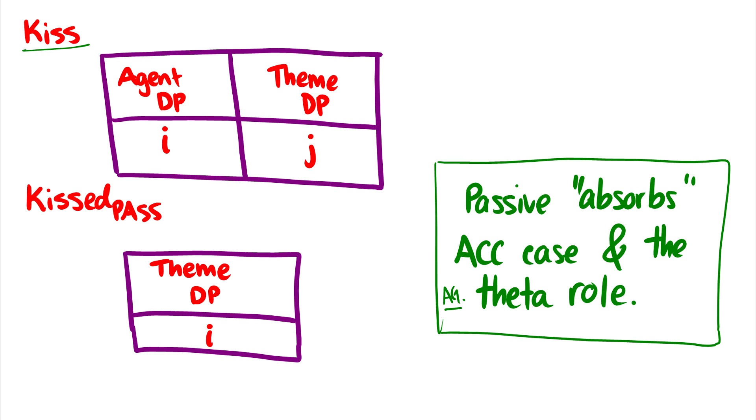So this should say agent theta role. So what's happening here is kiss gives nominative and accusative, well, kiss itself doesn't give nominative. T gives nominative to agent. But in the passive, first it loses the agent. So the agent goes away. And then the verb no longer gives accusative case. And this will force the theme to move up in the tree to get case.